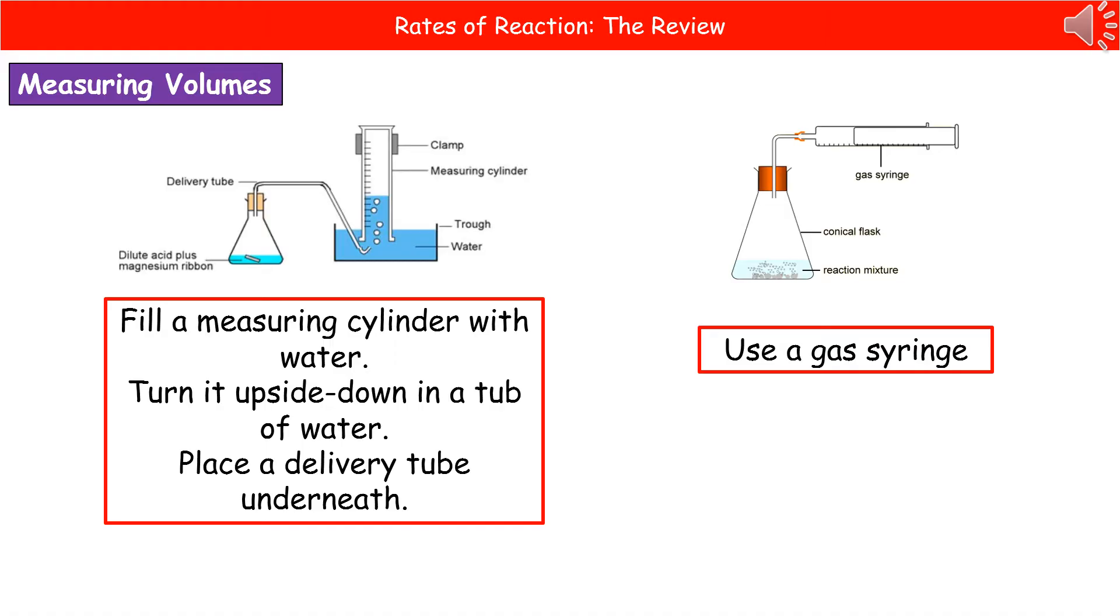On the left, we've got the one using an inverted measuring cylinder. So we fill the measuring cylinder right the way to the top with water, turn it upside down in a tub of water, and then you move your hand away once it's upside down. And then we ensure that a delivery tube goes underneath the measuring cylinder.